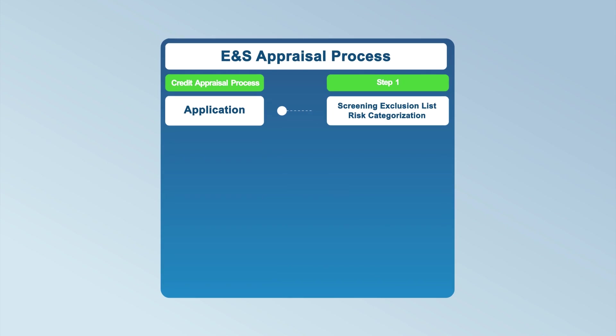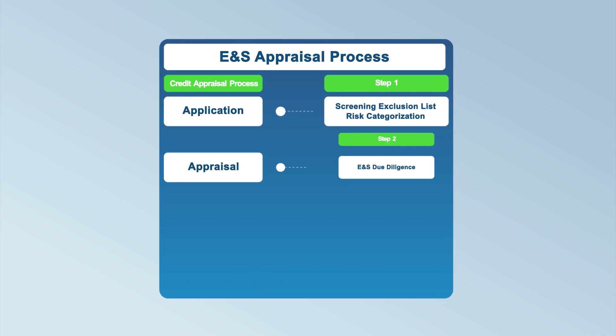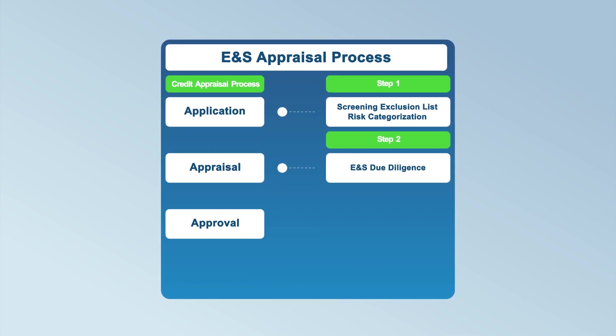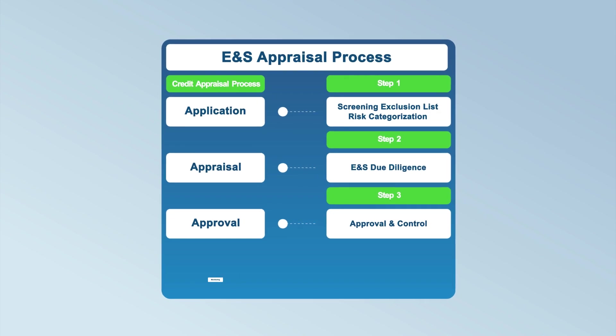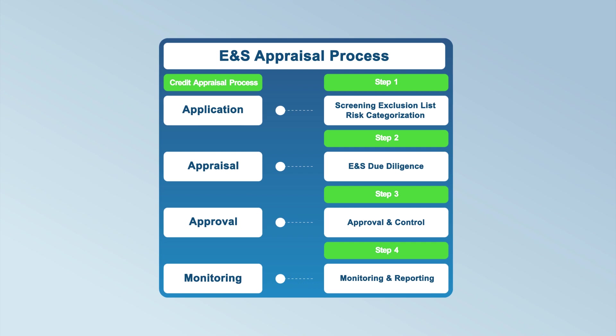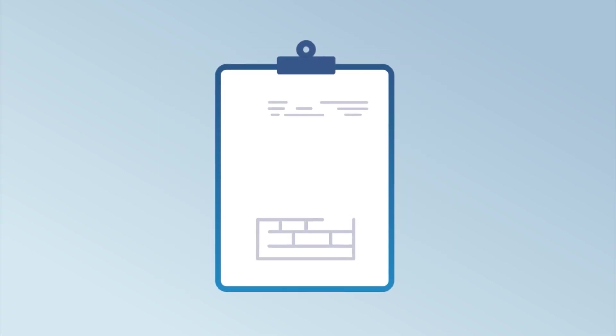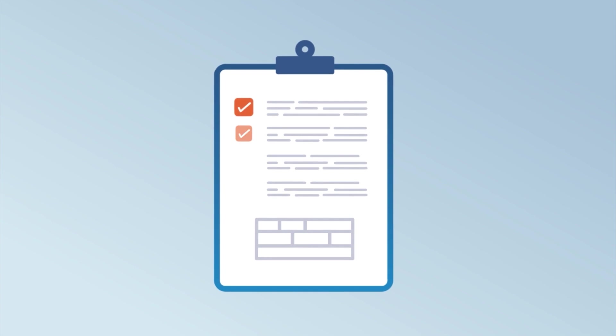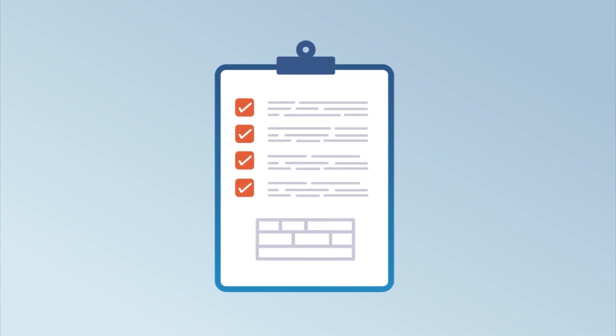The ESMS should be applied in all phases of the institution's credit risk management process and integrated into its day-to-day business activities. It should not be a standalone process. It also requires that the financial institution's clients implement mitigation measures for any identified E&S risks. This can significantly reduce the institution's E&S risks as well.